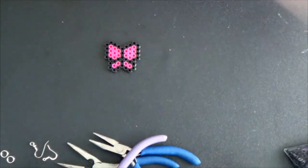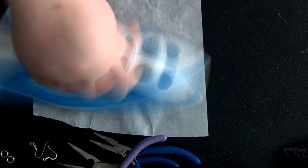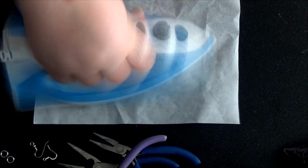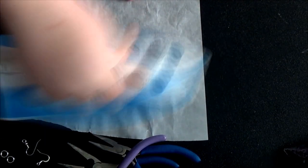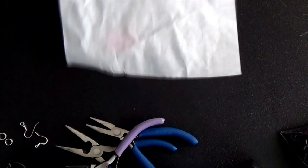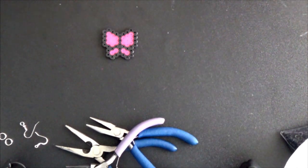This is only one of the earrings. If you want to turn them into earrings like I did, make sure to repeat the process with the pattern and ironing for a second piece. You can only make one butterfly at a time with the particular hexagon shape I used for my pegboard because mine was smaller.